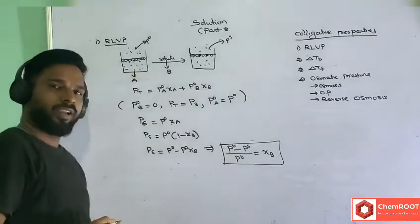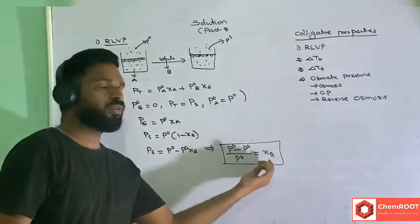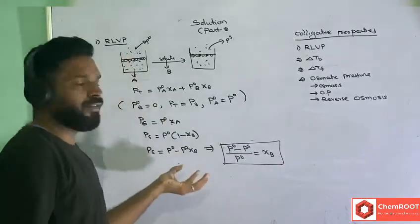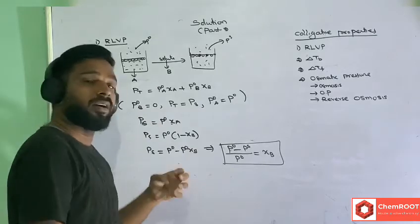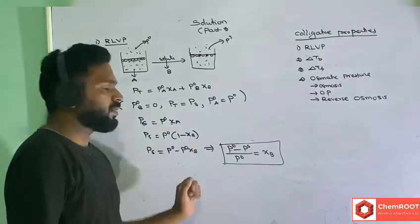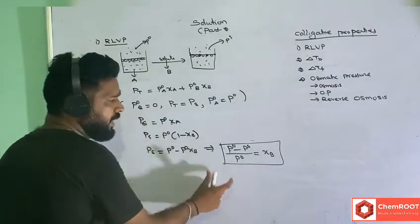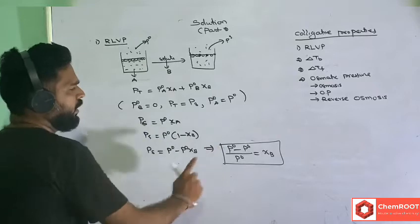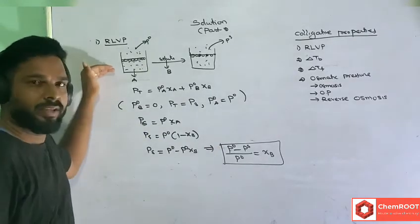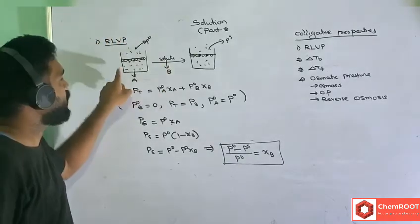Therefore, (P0 − Ps) / P0 = χ_B. The relative lowering of vapor pressure is directly equal to the mole fraction of solute. This is also called Raoult's law for solids in liquid, and it is the basic formula for relative lowering of vapor pressure. We start from pure solvent with vapor pressure P0 and add solute, causing vapor pressure to decrease.